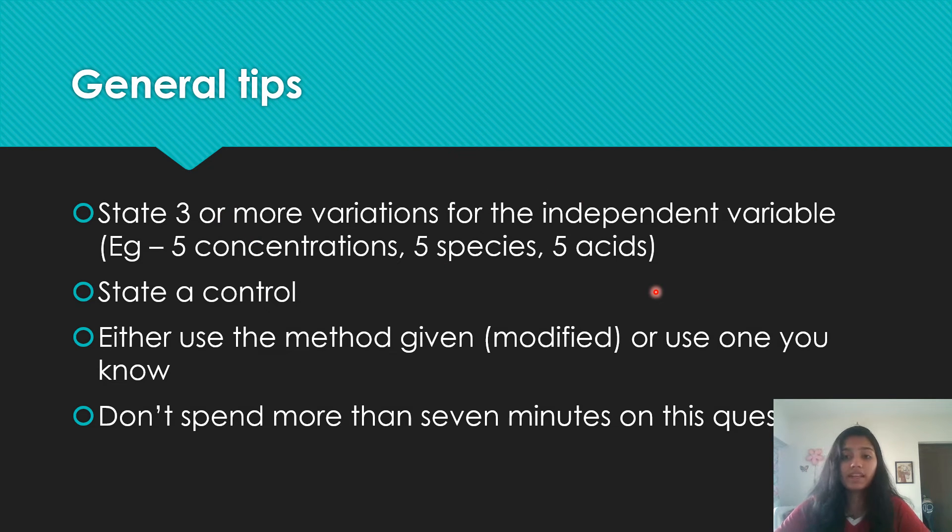Then general tips. So for the independent variable, like supposing state the effect of concentration on the rate of diffusion. You know that concentration is your independent variable. Diffusion is your dependent variable. So if you are going to plan your own investigation based on this, you will have to use three or more variations. So three or more concentrations have to be used. I always say five. Because five is the safest.